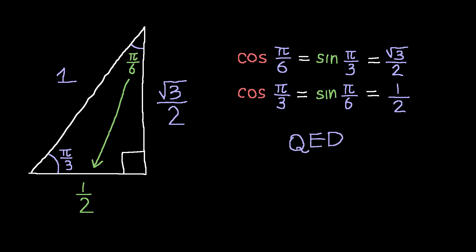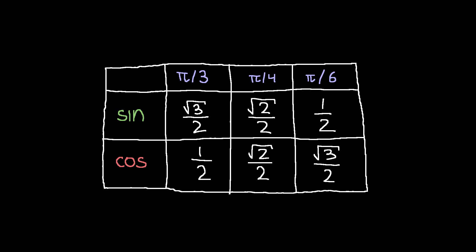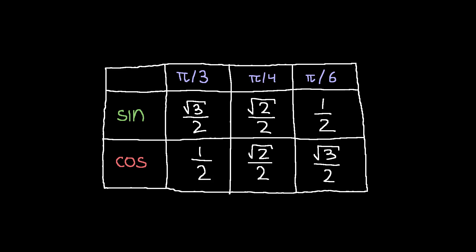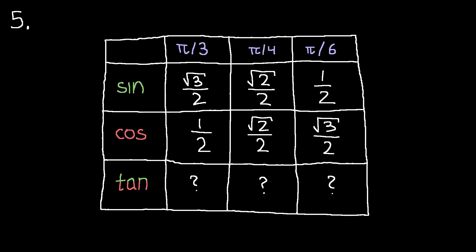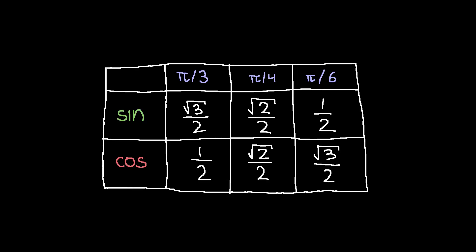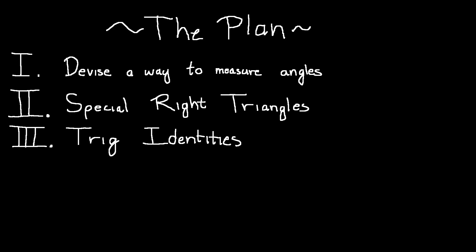Now we have ourselves a table of values for sine and cosine. Notice that the row for cosine is just the row for sine backwards. This shouldn't be surprising at all since the cosine is just the complementary sine, remember? As an exercise, see if you can compute the value of tangent for each of these angles. Now that we have a database of known values of sine, we can move on to the next part of the plan, which is to combine these known values to get new ones using trig identities.